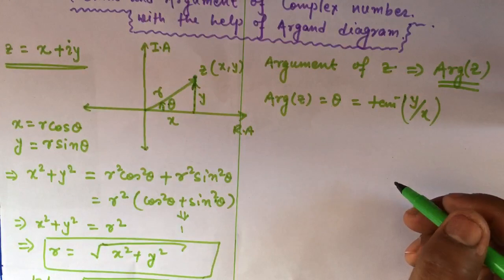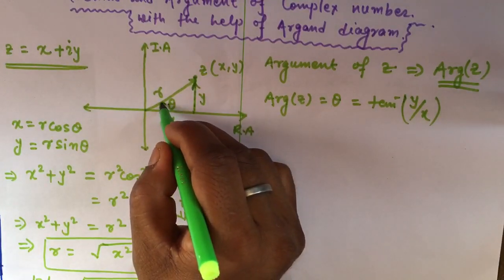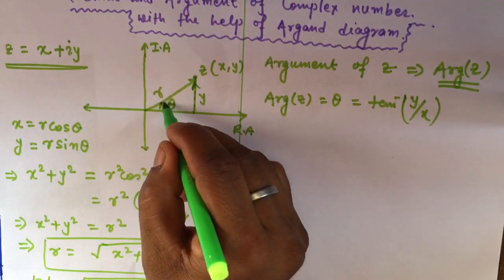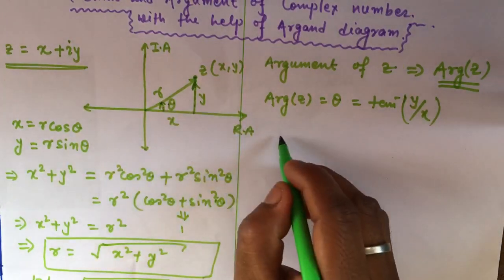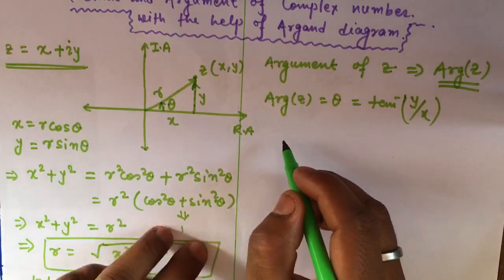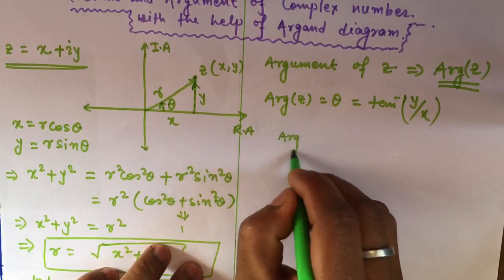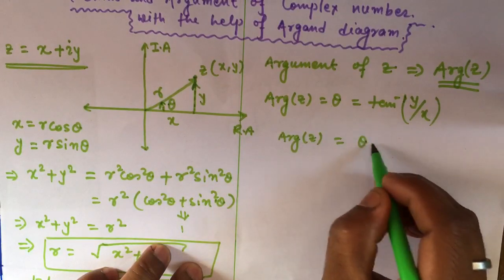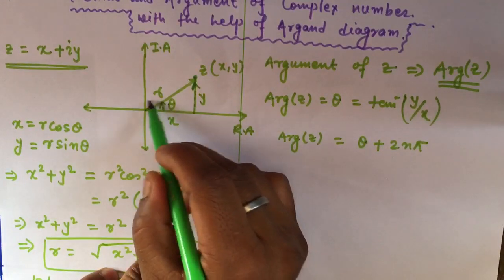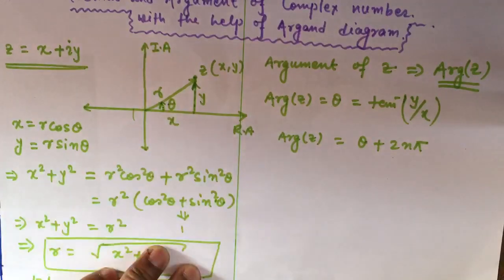We can see that theta can take many values. If you rotate by 2π, that is 360 degrees, you return to the same theta. So theta may vary from 0 to infinity, and the general form of the argument is written as θ + 2nπ, which will always give the same angle value.